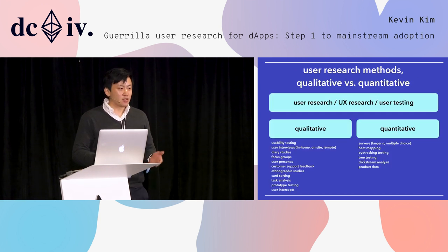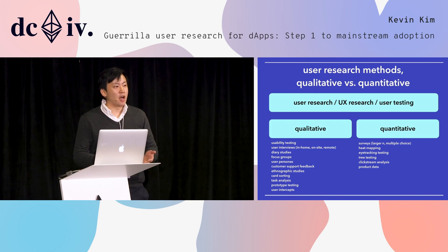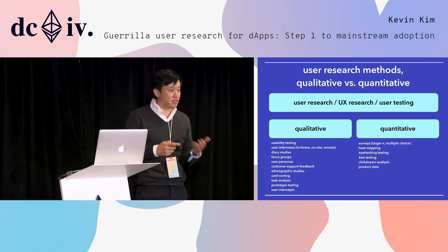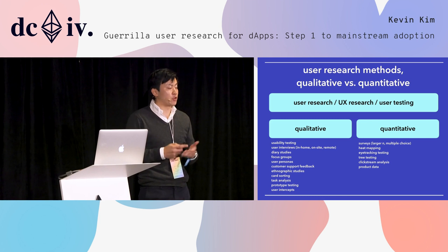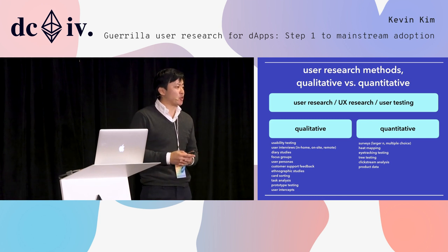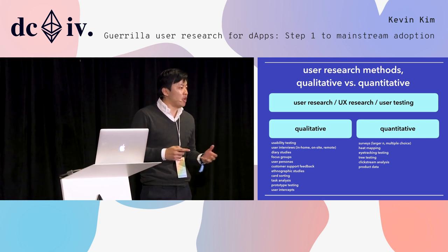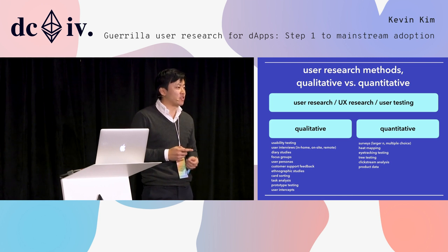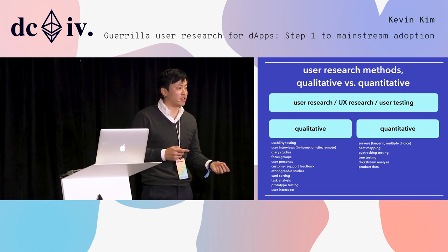Another main split is qualitative versus quantitative. A lot of user research is considered quantitative. For example, for surveys — especially when you do them at a really large scale — you need to calculate the margin of error and make sure you have statistical significance in your findings and results.